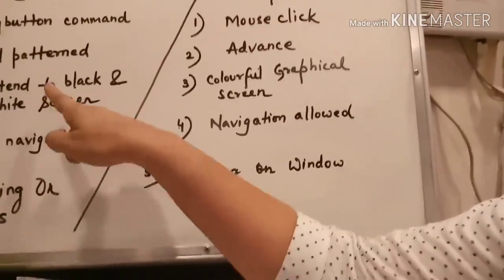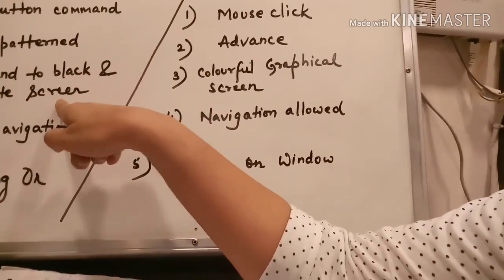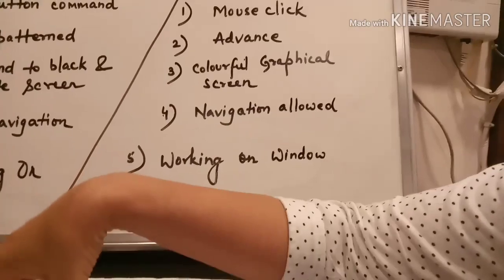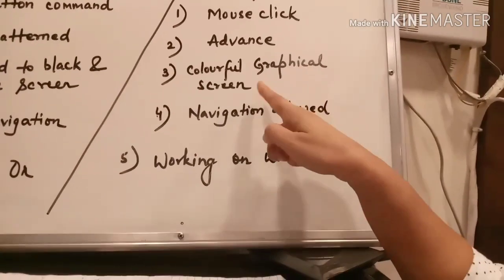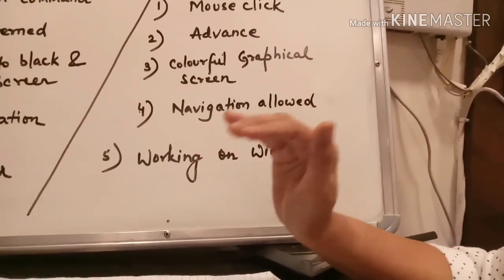CUI has no navigation — it does not indicate direction or guide you forward; even moving around the screen requires commands. GUI is navigation-based — when you click the mouse, a wizard screen appears, options appear, pop-up menus appear, which help you move further in the screen. Aur GUI mein icons bhi graphical hain — jaise recycle bin ki icon dustbin ki tarah hai, paintbrush ki icon ek brush ki tarah.